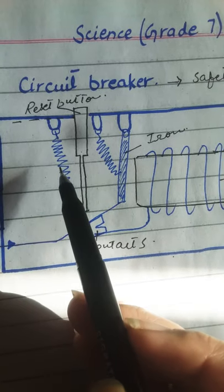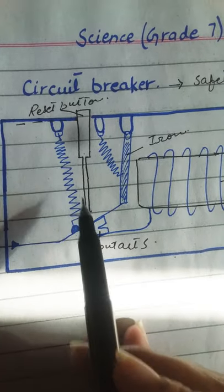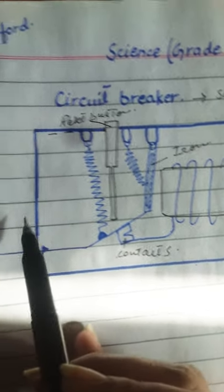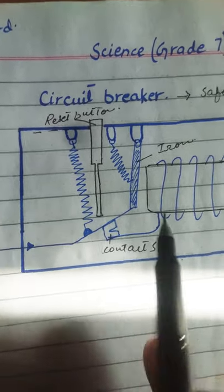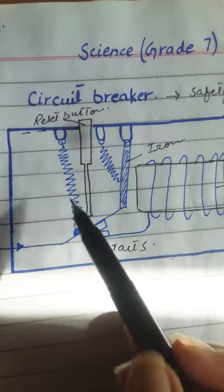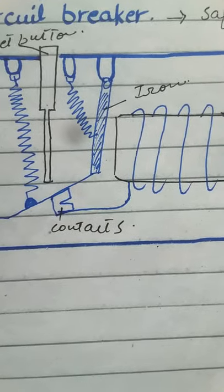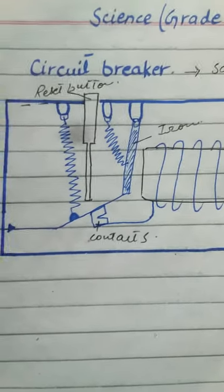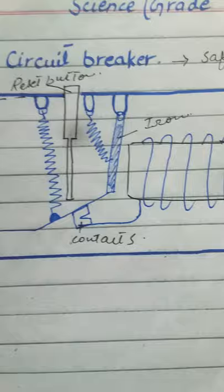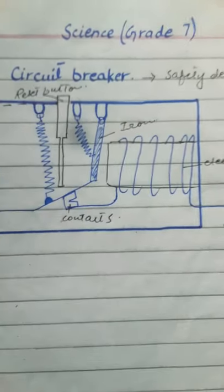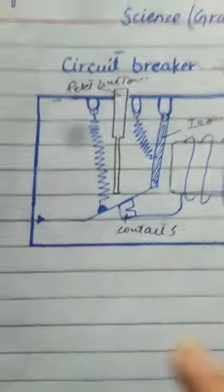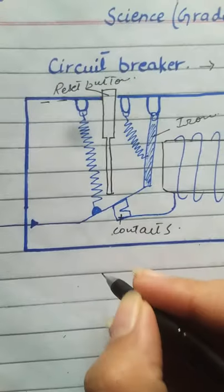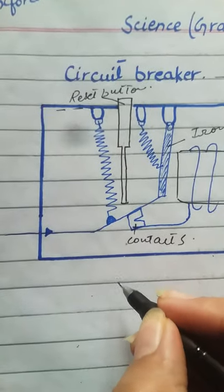The current is switched off when the spring pulls the contacts apart. The contacts will part, the circuit will cut off, and the current will not flow through the circuit. This was the use of the electromagnet in the circuit breaker.